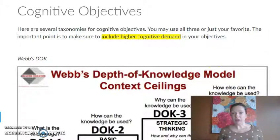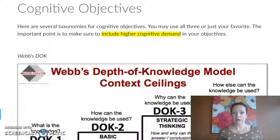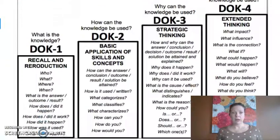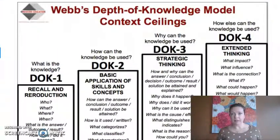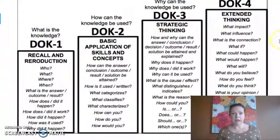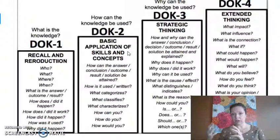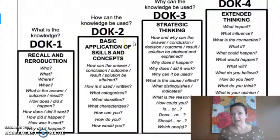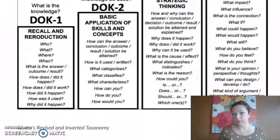In order to help us ensure that we have a variety of cognitive demand in our lessons, there are some taxonomies we can use as resources. The first one is WEBS, which is called Depth of Knowledge, often abbreviated DOK. It includes Recall and Reproduction, Basic Application of Skills and Concepts — which can involve transfer, where you learn something in one context and then apply it in a different context — as well as Strategic Thinking and Extended Thinking, exploring what could happen because of what you know.